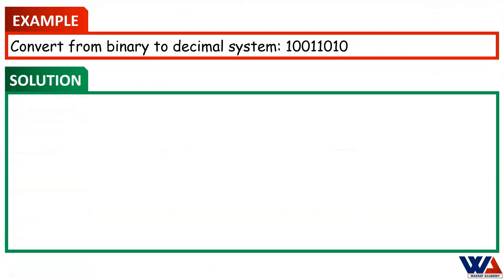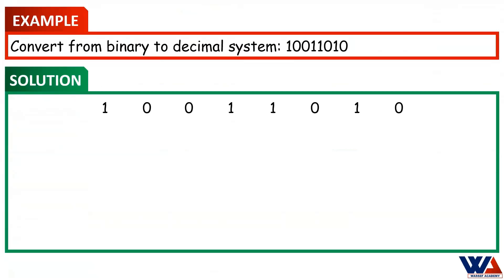This binary number consists of eight binary digits or bits that create one byte. In the first step, write the binary number by separating the binary digits with enough spaces. Each digit in the binary number can be converted into a number of base 2 according to its position.